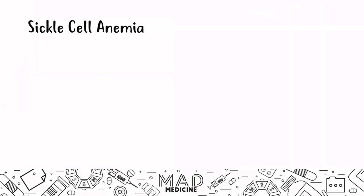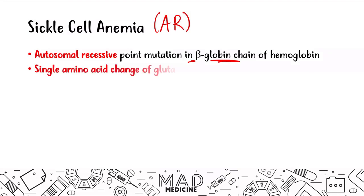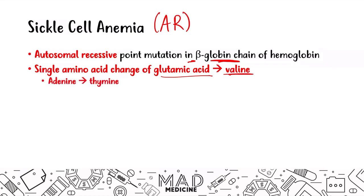Sickle cell anemia is an autosomal recessive point mutation in the beta globin chain of hemoglobin. Both hemoglobin S (sickle cell anemia) and hemoglobin C disease are autosomal recessive and are both point mutations in the beta globin chain. For hemoglobin S, there is a single amino acid change of glutamic acid to valine, caused by a change from adenine to thymine.